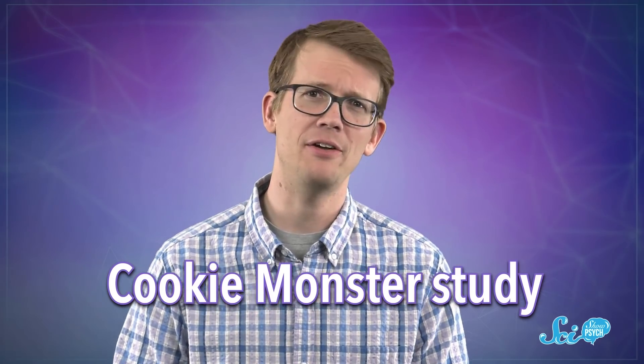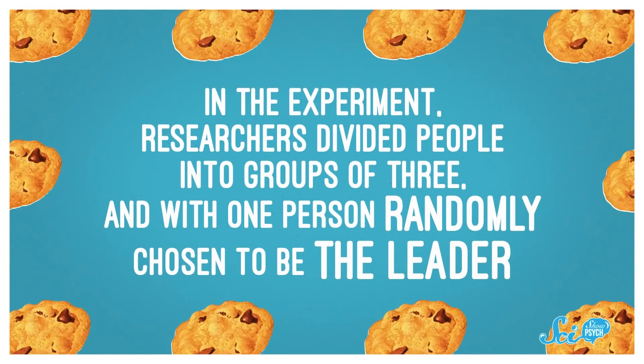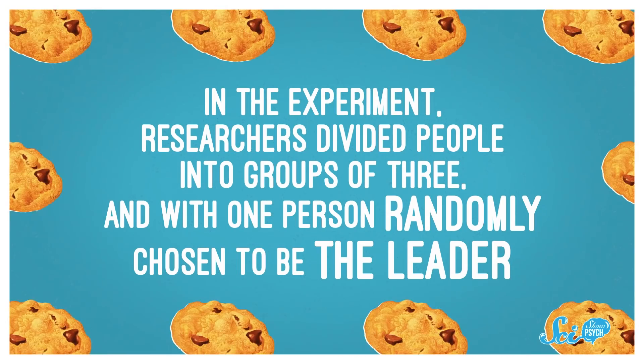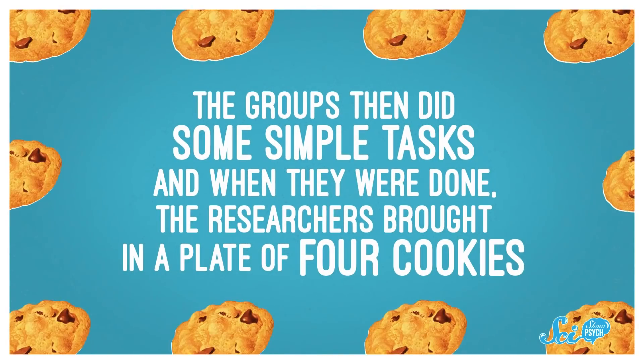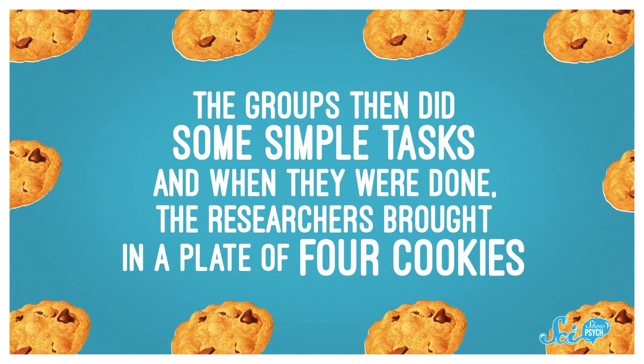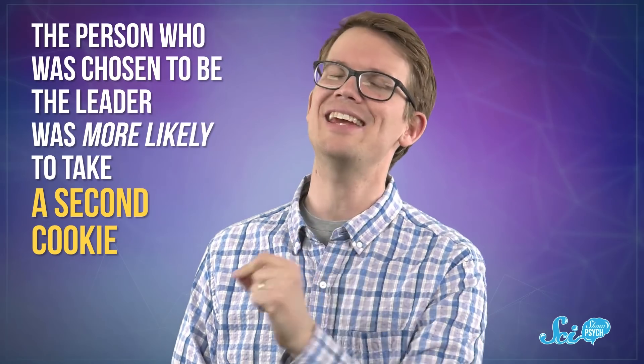There's still plenty of evidence that power corrupts people, though. One study, now called the Cookie Monster Study, found that people in positions of power were more likely to be greedy. In the experiment, researchers divided people into groups of three, with one person randomly chosen to be the leader. The groups then did some simple tasks, and when they were done, the researchers brought in a plate of four cookies. And surprise, surprise, the person who was chosen to be the leader was more likely to take a second cookie.